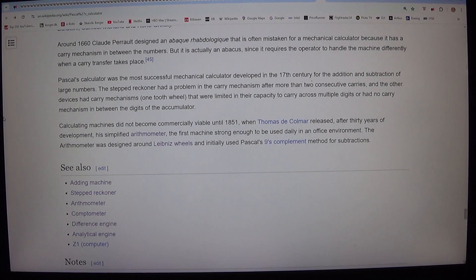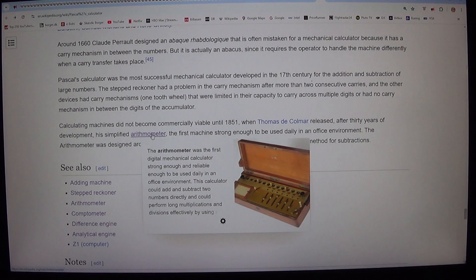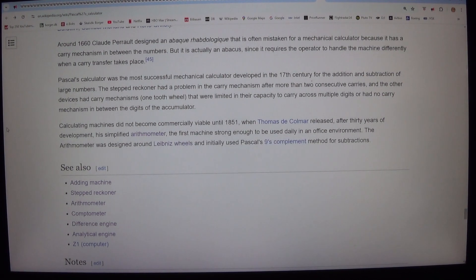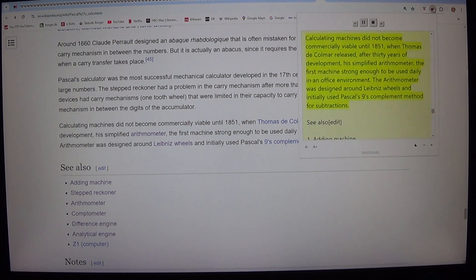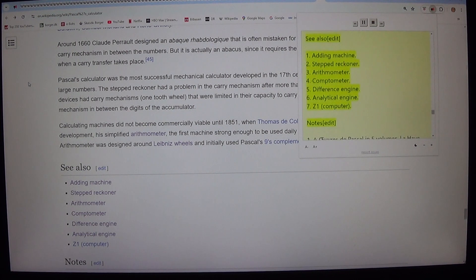Calculating machines did not become commercially viable until 1851, when Thomas de Colmar released, after 30 years of development, his simplified arithmometer, the first machine strong enough to be used daily in an office environment. The arithmometer was designed around Leibniz wheels and initially used Pascal's 9's complement method for subtractions.